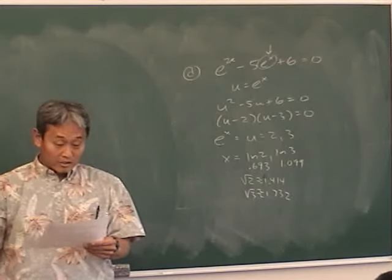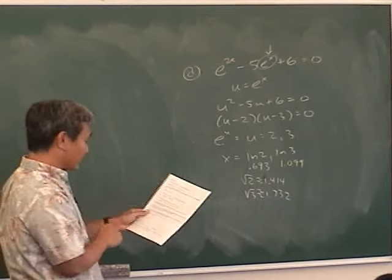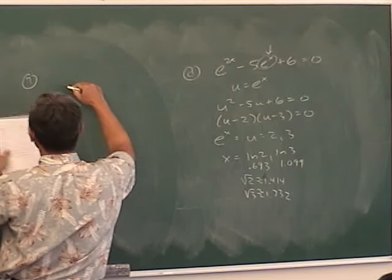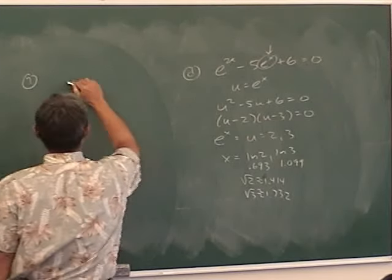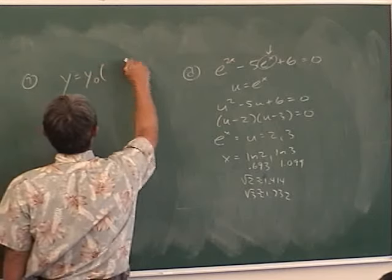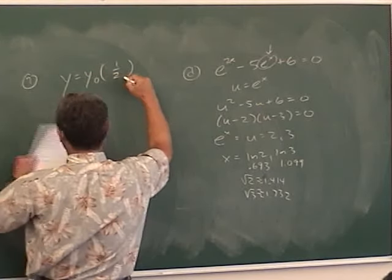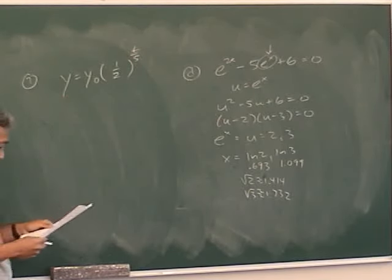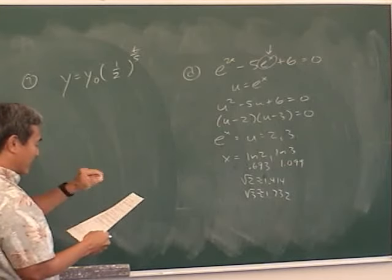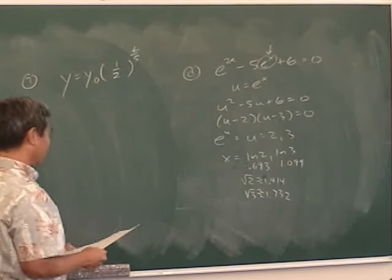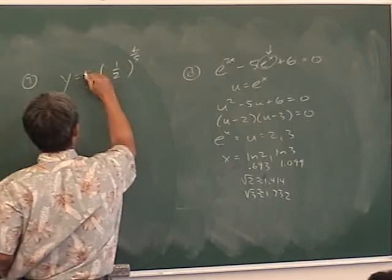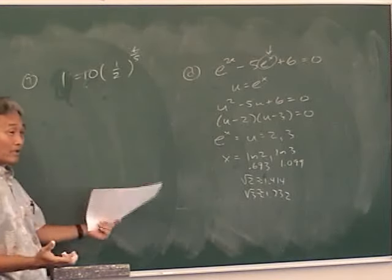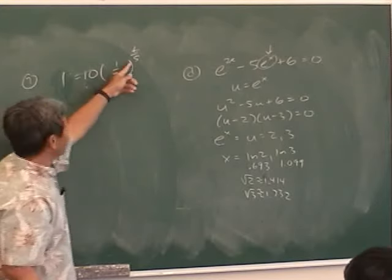Okay, number seven. So either number seven or number nine is going to be on tomorrow's quiz, but they're both like the same thing. Okay, number seven. The half-life of a radioactive substance is five hours. Okay, how do I model that as an exponential function? Y equals Y naught. What do I put in the parentheses? One half. And it takes five hours, so T over five. Can everybody write that? How long will it take for 10 grams to decay to one gram? Okay, where do I plug in the 10? For Y naught. That's how much you have at the very beginning. And where do I plug in the one? Over here.